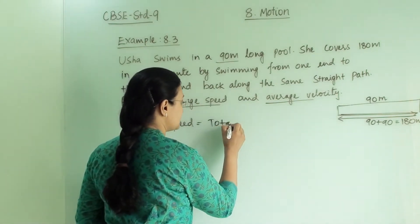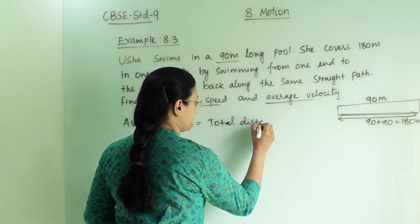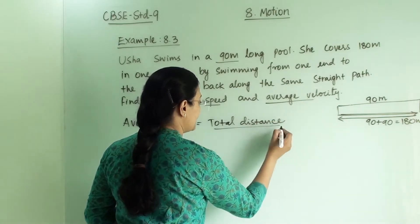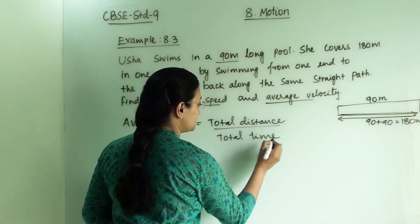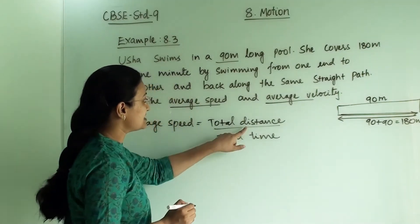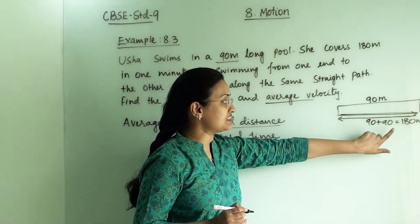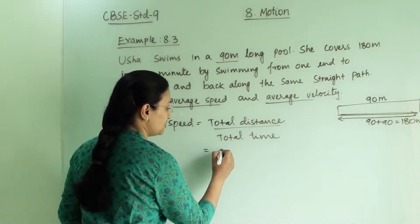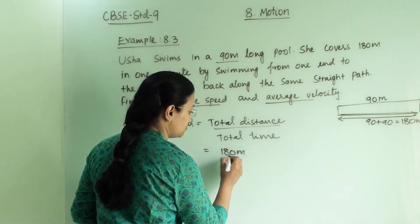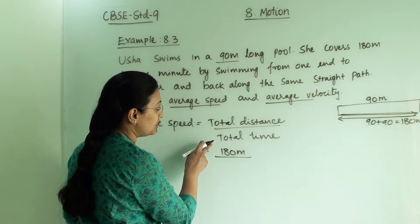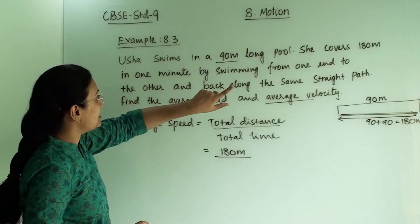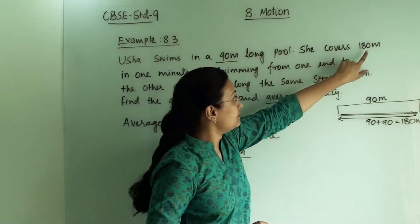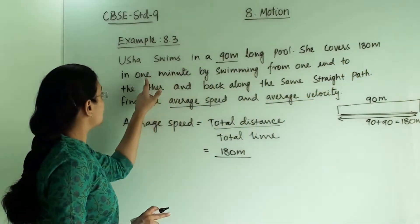So here total distance divided by total time taken for this distance. Total distance is 90 plus 90, that is 180 meters. Total time taken: she covers 180 meters, so total time is one minute.